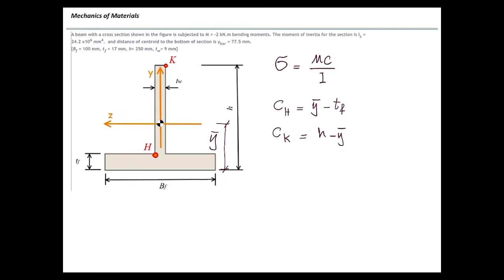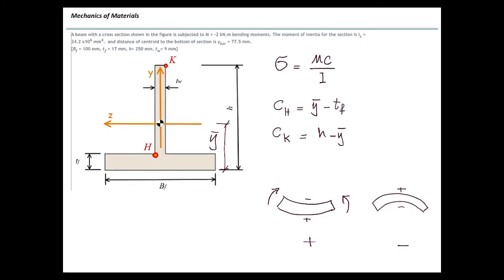We also need to determine the sign. For determining sign in these problems, we need to remember the rule for stresses and bending moments. A positive bending moment produces tension on the bottom and compression on top. This is the way that a beam bends because of a positive bending moment — it compresses the top portion and puts the bottom part in tension. A negative moment bends the beam in the opposite way, producing compression on the bottom and tension on top.